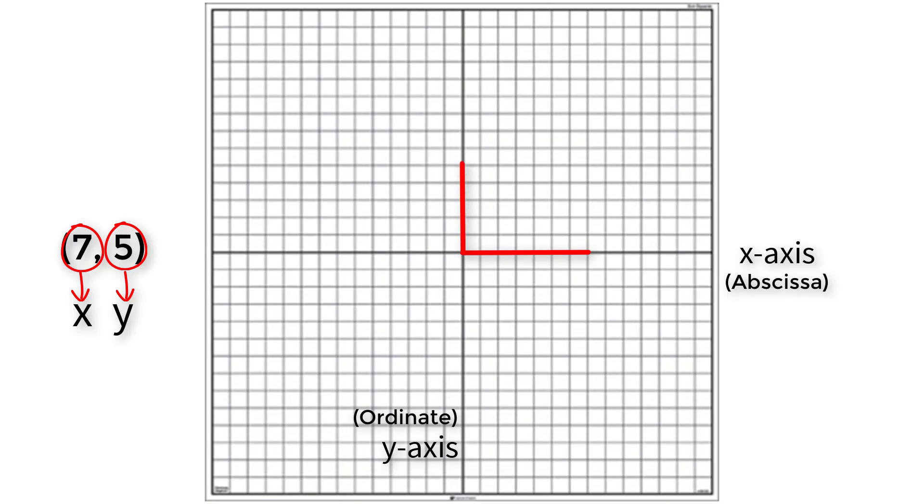Finally, we can connect the two lines like so and plot a point where the lines intersect. Now, you have a point plotted on the coordinate plane.